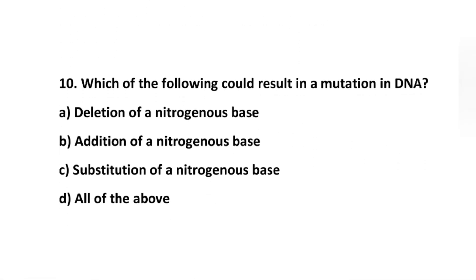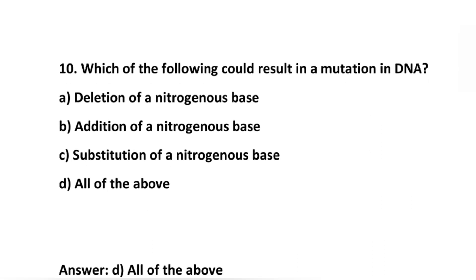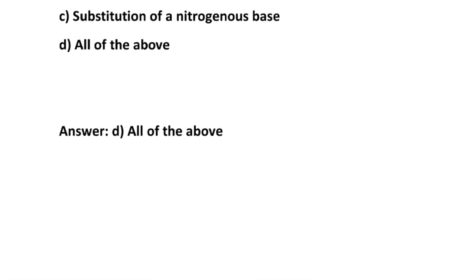Number 10: Which of the following could result in a mutation in DNA? Option A: deletion of a nitrogenous base. Option B: addition of a nitrogenous base. Option C: substitution of a nitrogenous base. Option D: all of the above. The correct answer is D, all of the above, because any of these can result in changes in DNA which may lead to mutation.